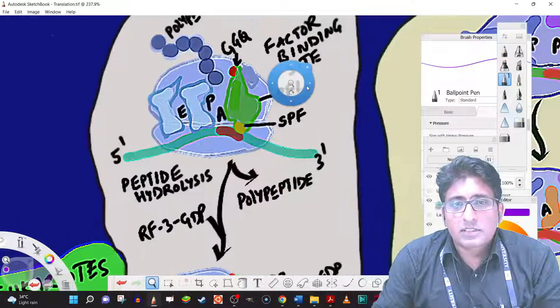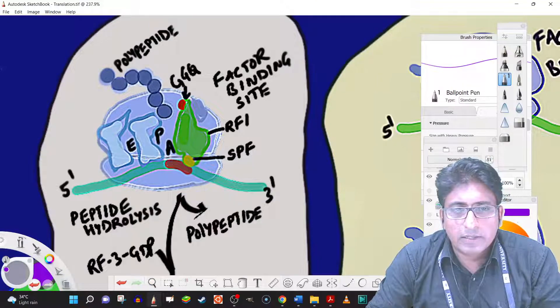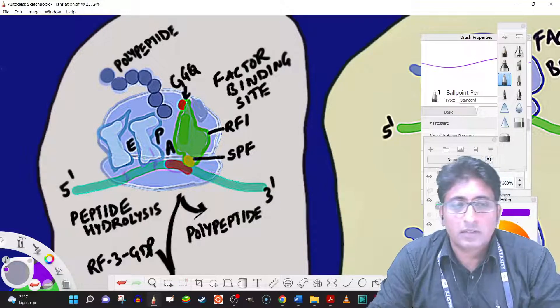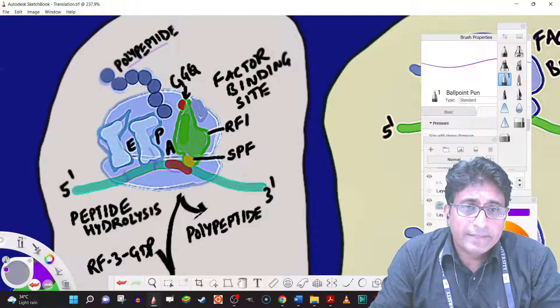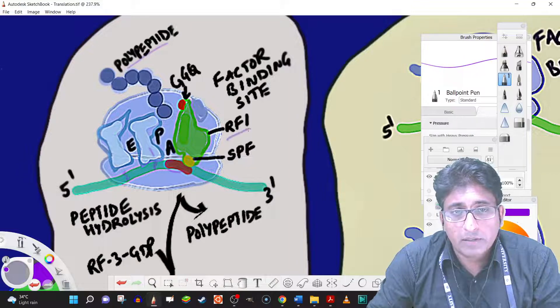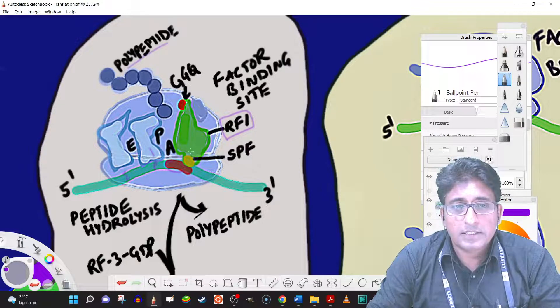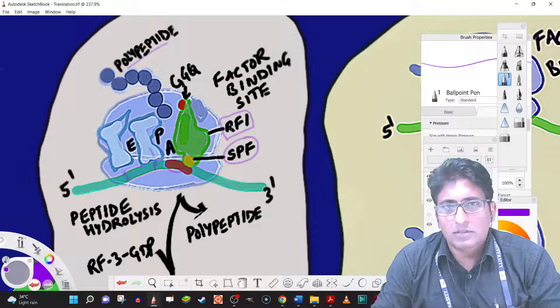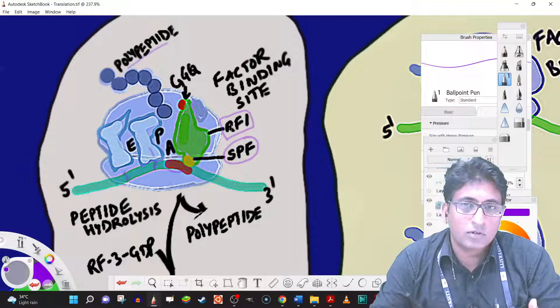So the scenario is simple here. We have this stop codon in the A site. We have the peptidyl tRNA here in the P site. And in the E site, we have the other tRNA. So the polypeptide should be released. And that is stimulated by the release factor 1, which has two important motifs. One of it is the anticodon. It's called as the peptide anticodon because the anticodon is supposedly recognizing the stop codons here. And there's no anticodon for the stop codons.